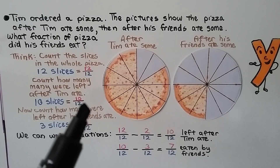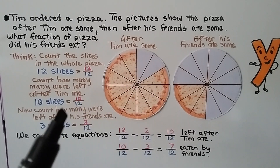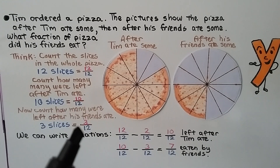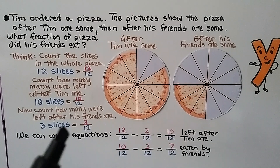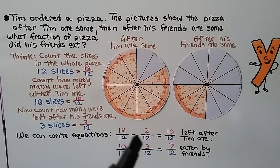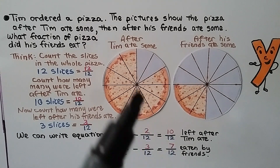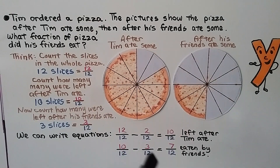Now we count how many were left after his friends ate: 3 slices, that's 3 twelfths. We write the equations: 12 twelfths minus 2 twelfths equals 10 twelfths — that's what's left after Tim ate. Then we take 10 twelfths and subtract the 3 twelfths still there, and it equals 7 twelfths. We know Tim's friends ate 7 twelfths of the pizza.